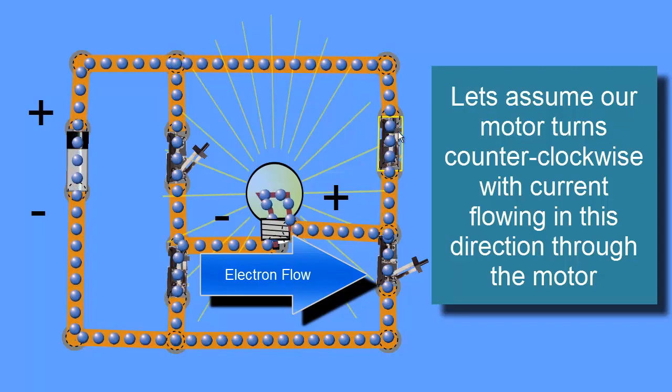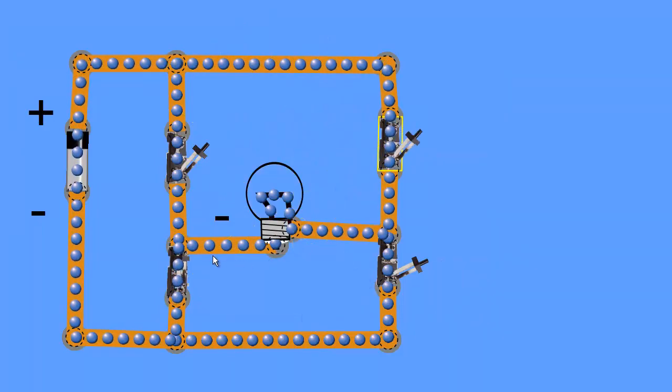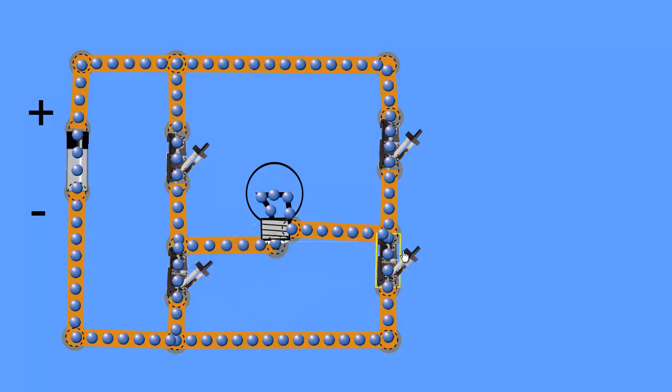So let's get it to turn the other direction. First thing we need to do is open up both switches, and I'll show you why later. So now we want to get a line up so that the current's flowing the other direction. So we're going to line up this switch, and this is a little slow right now, and this switch.